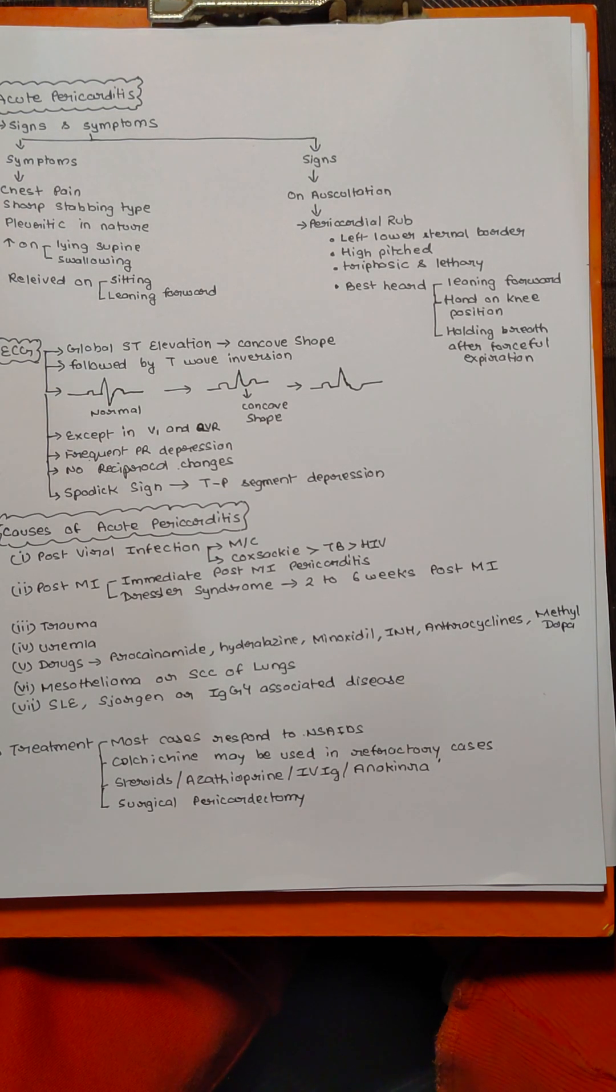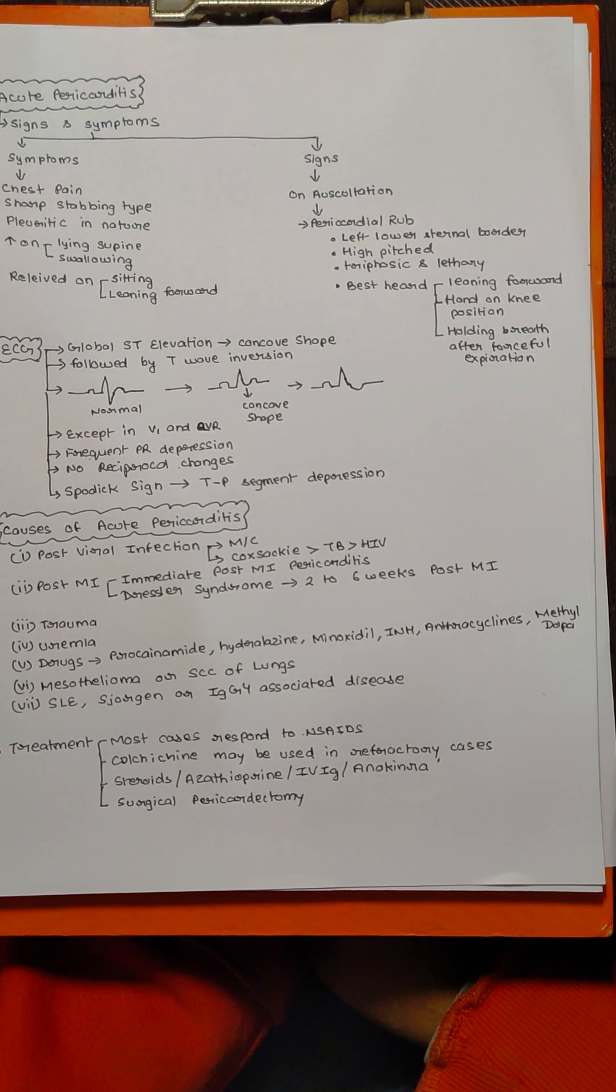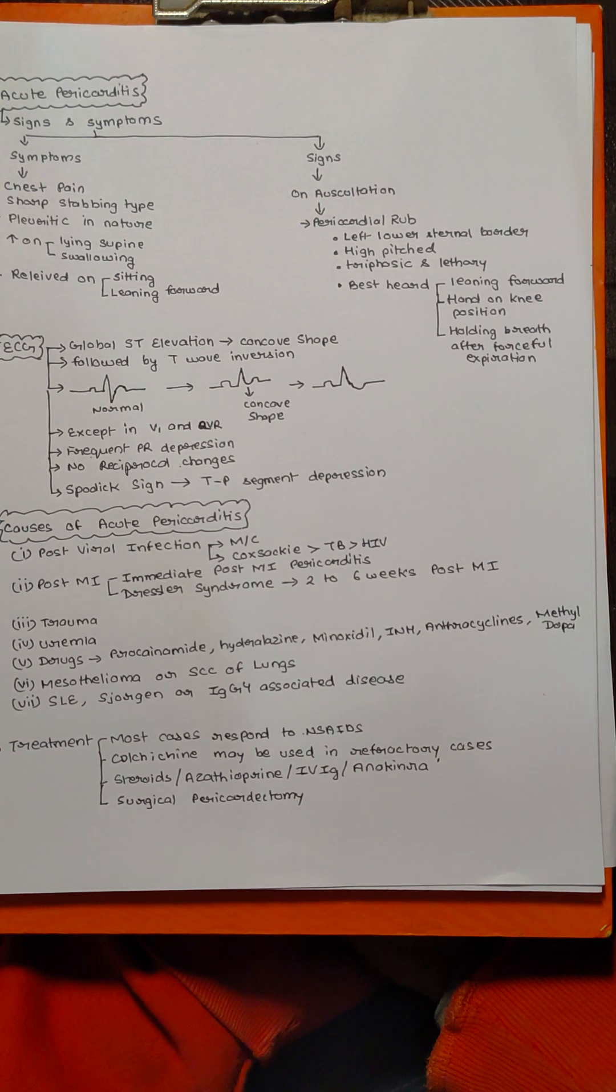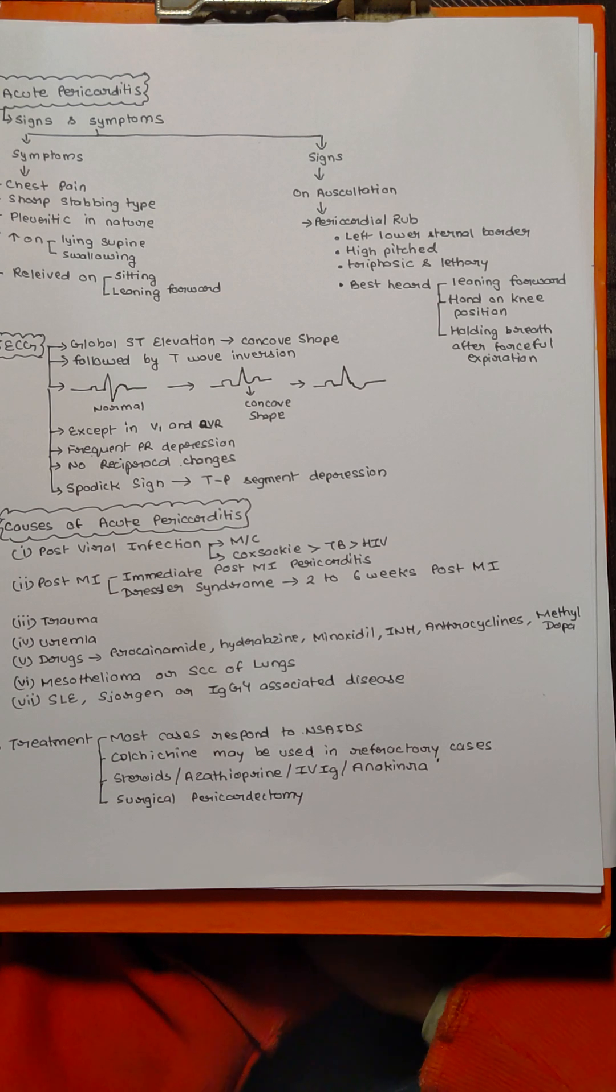Similarly, if a patient is having anterior wall MI, the anterior wall leads are going to show ST elevation, but the inferior leads are going to show ST depression. These kinds of changes are known as reciprocal changes, and reciprocal changes are never seen in acute pericarditis.